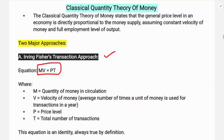M is the quantity of money. V is the velocity of money — that is, the average number of times a unit of money is used for transactions in a year. P is the price level and T is the total number of transactions.